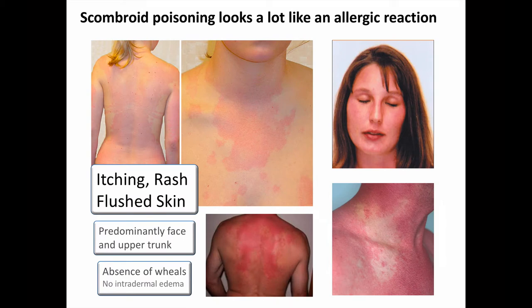Scombroid fish poisoning looks a lot like an allergic reaction. Common presenting complaints include rash, itching, and flushing, more typically seen on the face, neck, and upper trunk. What might distinguish this from a true immunologically-mediated allergic reaction is the absence of classic urticarial wheals, where the itchy erythematous skin lesions are associated with intradermal edema and are raised. Given that most patients will be able to provide a history of very recent fish ingestion, it's easy to see how this could be mistaken for an allergic, immunologically-mediated reaction. But if that fish was tuna or mahi-mahi or another known associated species, and especially if the patient had no known seafood allergy, I'd suspect scombroid instead.